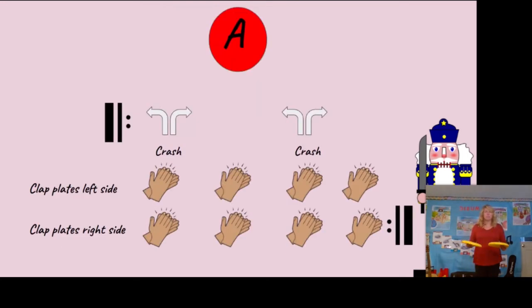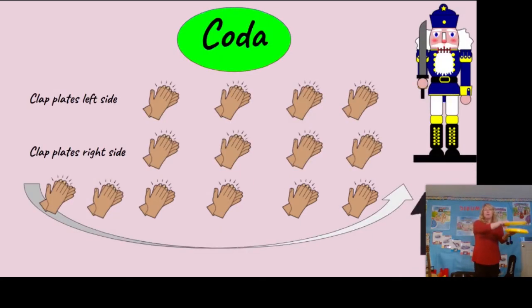Now we go back to the A section again, so this should be very easy. Crash, crash, left, right, crash. Then we're going to just keep clapping - clapping on one side, clapping on the other side. When we get to the very end, it's going to go really fast. We're just going to clap around to the middle of our bodies and end with one last big crash. So let's try it with the music now. Are you ready?